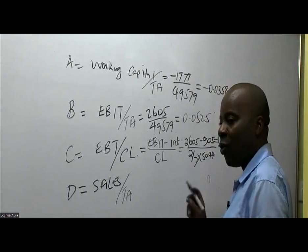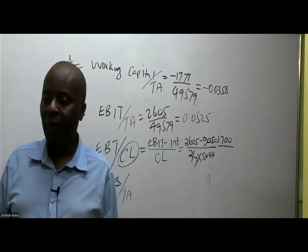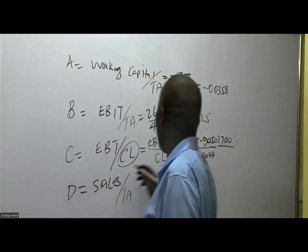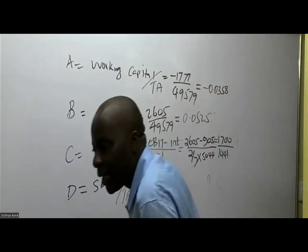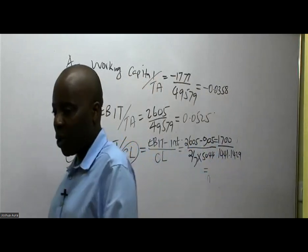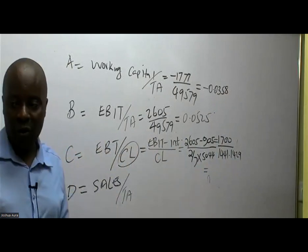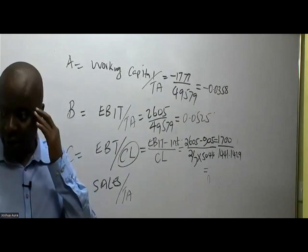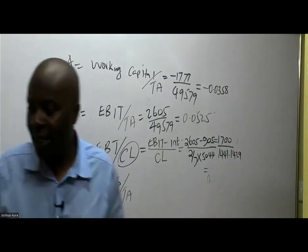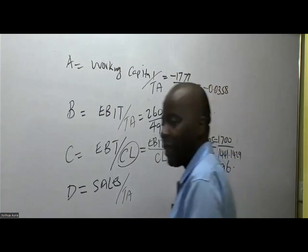So current liabilities = (2/7) × 5,044. Students are giving me approximately 1,441. So taking EBT of 1,700 over current liabilities of approximately 1,441, Isaac Obai gives me ratio C = 1.1796. So ratio C = 1.1796.